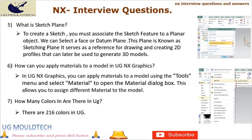Question 6: How can you apply materials to a model in UGNX Graphics? In UGNX Graphics, you can apply materials to a model using the Tools menu and selecting Material to open the Material dialog box. This allows you to assign different materials to the model. Question 7: How many colors are there in UG? There are 216 colors in UG. These colors can be used for various purposes, including applying colors to model surfaces, creating realistic renderings, defining material appearances, and highlighting specific features. UGNX allows you to select colors from the predefined color library or create custom colors using RGB or hexadecimal values.